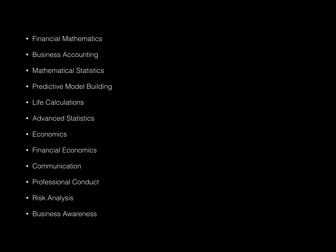Firstly, all these eight actuaries have in common are the following skill sets: financial mathematics, business accounting, statistics, model building, life calculations, economics, communication, professional conduct, risk analysis, and all that type of stuff. These are the skills that make someone an actuary. What they can then do is there are specialist subjects which branch off and hone in on specific areas. So now I'm going to be going through the eight types of actuaries.